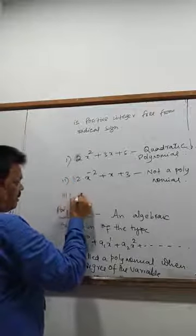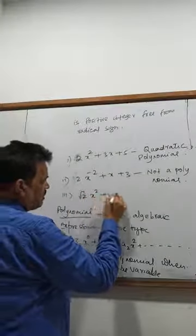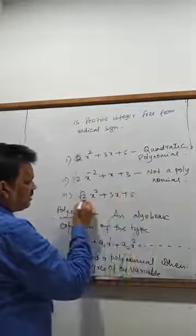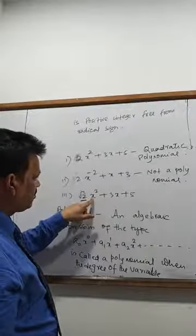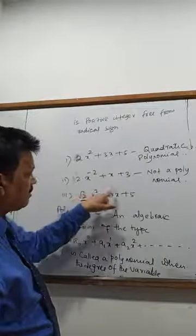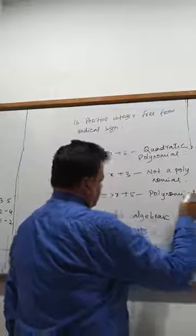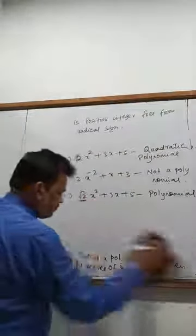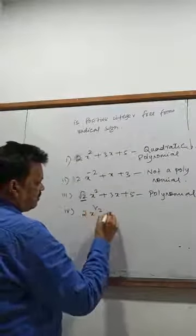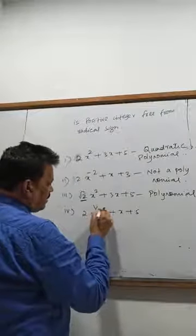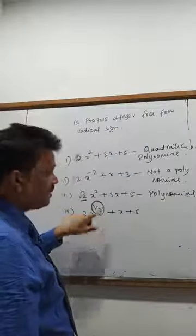Again, I write root 2 times x square plus 3x plus 5. The coefficient can be a constant number like root 2, but that doesn't affect it being a polynomial — you have to check the power of the variable. This is a polynomial. But if I write 2x to the power 1/2 plus x plus 5, because the degree is fractional, it should not be fractional — so that is not a polynomial.